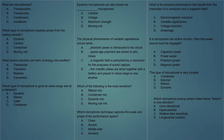Quiz time. What are microphones? A, transponders; B, transducers; C, condensers; or D, oscillators? The answer is B — microphones are transducers. Which type of microphone requires power from the mixing console? A, dynamic; B, cardioid; C, condenser; or D, moving coil? The answer is C — condenser microphones require power from the mixing console. What device converts one form of energy into another? A, transducer; B, transistor; C, resistor; or D, converter? The answer is transducer — microphones are transducers because they convert one form of energy into another.